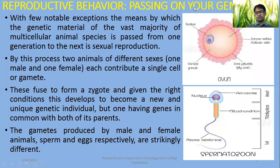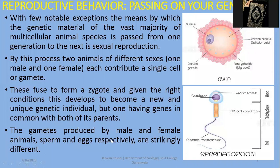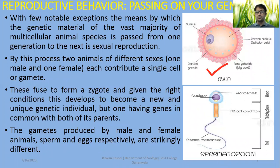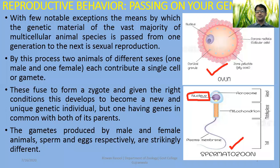Reproductive behaviour means passing on your genes to the next generation, and that is the basic property in all living organisms. With few notable exceptions, the means by which the genetic material of the vast majority of organisms is passed on is sexual reproduction. Most animals pass on their genes via sexual reproduction, producing two different types of gametes. One gamete is larger, known as the ovum or egg, having most of the organelles and energy reserves for embryo development. The second is a nucleus donor — the spermatozoon or sperm — that donates only the nucleus during fertilization. These fuse to form a zygote which, given the right conditions, develops into a new and unique genetic individual having genes in common with both parents.